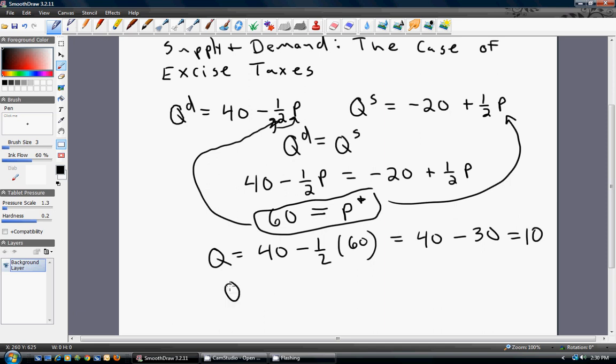And we could do the same thing by plugging 60 back into the supply equation, minus 20 plus one half times the equilibrium price of 60 dollars. Once again, we do get 10. Equilibrium quantity is 10.